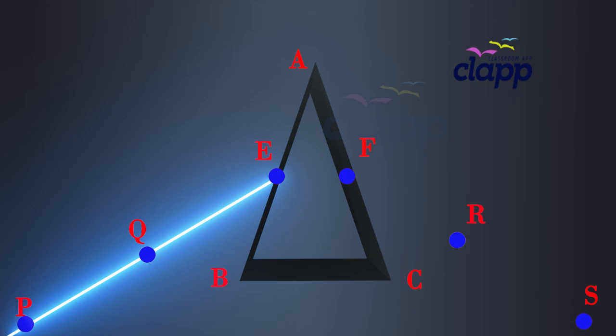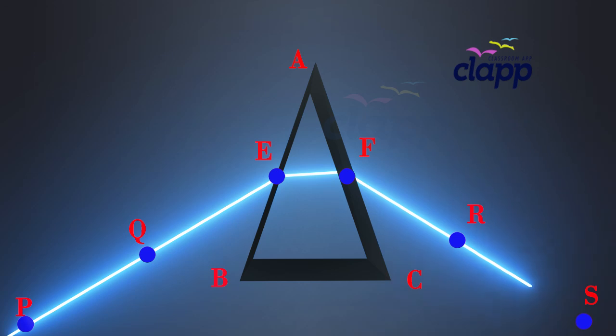Remove the pins and the glass prism. The line PE meets the boundary of the prism at point E. Join E and F. Similarly, join and produce the points R and S. Let these lines meet the boundary of the prism at E and F, respectively.